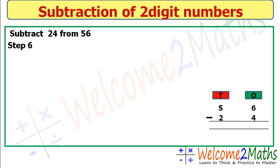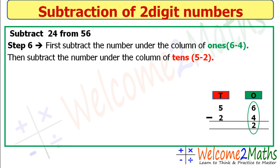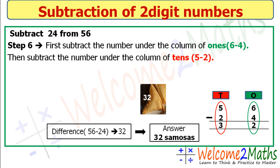Step number six: first subtract the numbers under the ones column — 6 minus 4. Six is the larger number and four is the smaller, so 6 minus 4 equals 2. Then subtract under the tens column — 5 minus 2 equals 3. So the difference between 56 and 24 is 32.